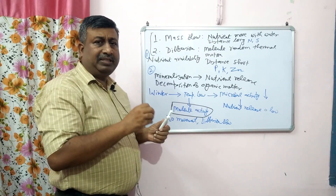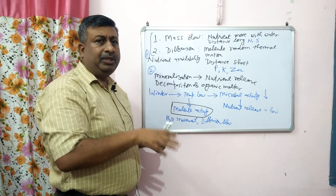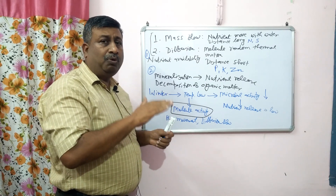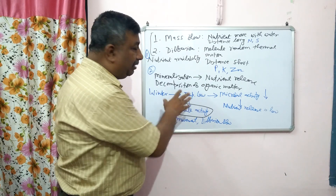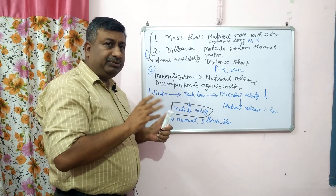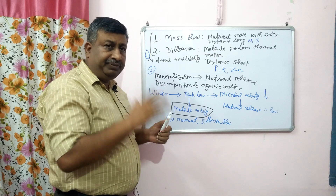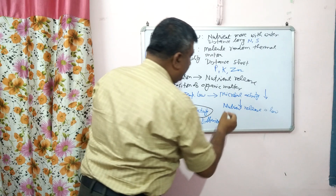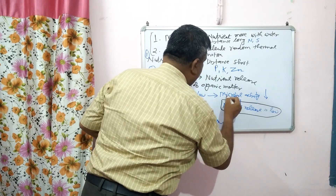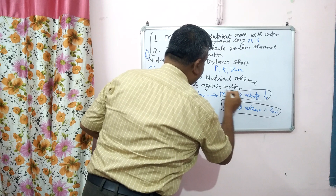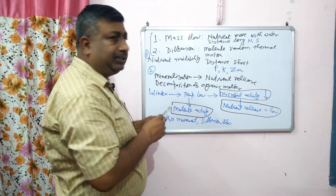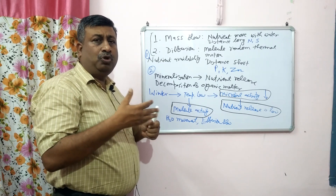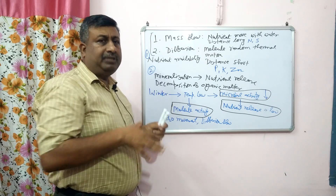If we are applying fertilizer — for example urea, MOP, DAP, whatever fertilizer — they dissolve in water but because of low temperature their movement in soil is very low due to low molecular activity. So low molecular activity reduces water movement and diffusion, and microbial activity is also low so nutrient release is slow. That is why the availability of nitrogen, phosphorus, zinc, calcium, and magnesium is all low in winter season when compared with summer season.